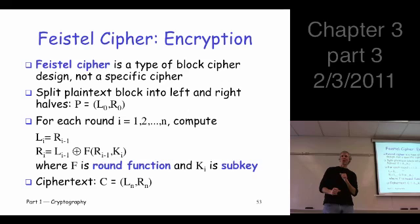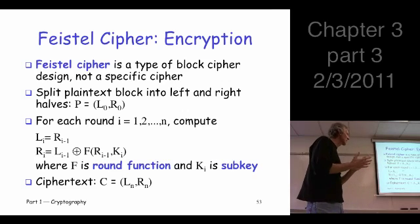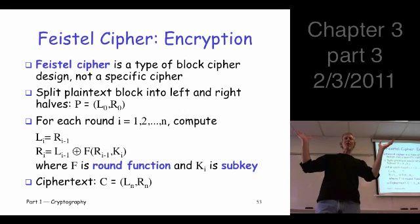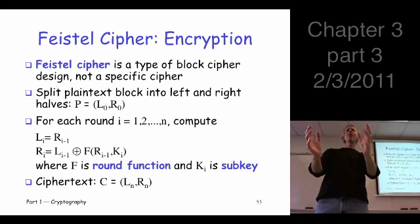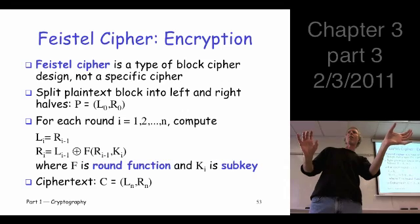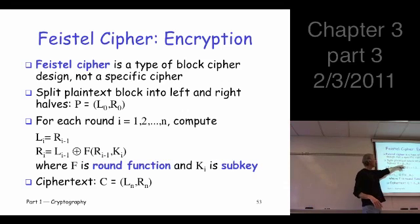It was named after a person — Feistel — a guy named Feistel who worked for IBM. So we take the plaintext and split it in half. Suppose the plaintext block is 64 bits — we split it in two, giving us a 32-bit left half and a 32-bit right half. We call the initial plaintext L0 and R0.